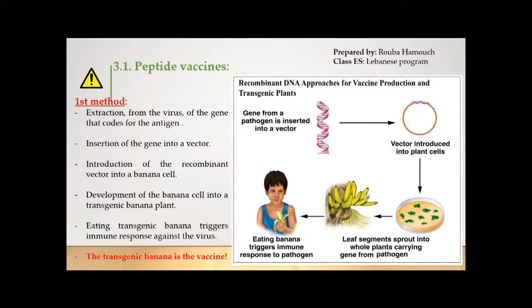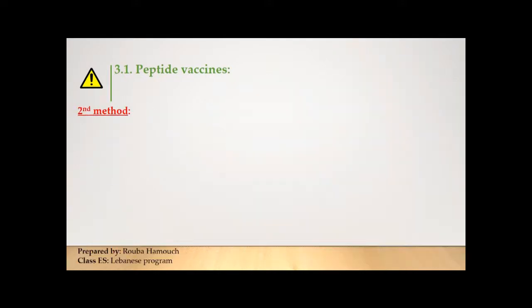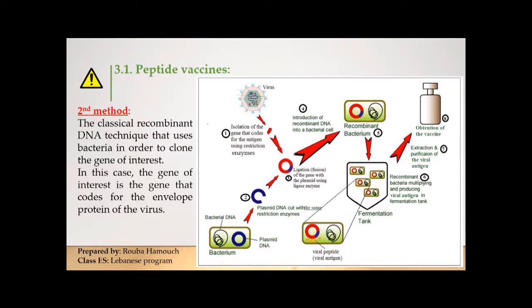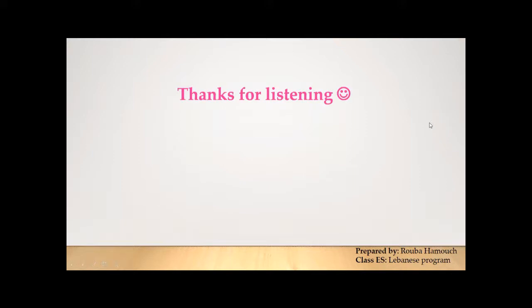In summary, the peptide vaccine can be produced by two methods. The first is to create transgenic fruits: we introduce the viral gene into a plant cell, allow it to grow and express the viral antigens, and administer the transgenic plant as the vaccine. The second is the classical recombinant DNA technique: we clone the viral gene into a bacterium and extract the resulting proteins to make the peptide vaccine. Thanks for listening — in the next video we will explain the production of live virus vaccines.